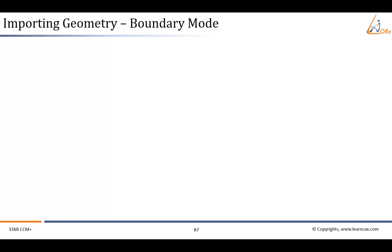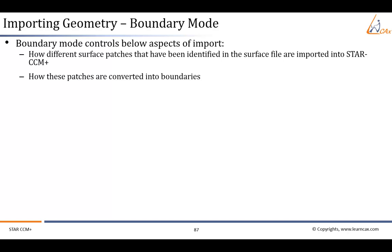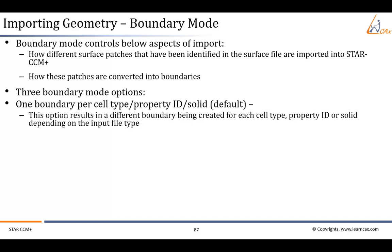We can avoid all this by using the boundary mode option while importing. When you select the 'create new region' option for import mode, you have to select the boundary mode. This will control how different surface patches that have been identified in the surface file are imported into Star CCM+, and also how these patches are converted into boundaries. A patch is a part of the surface that has been tagged in some way to be different from the rest — for example, it has been assigned a different cell type or family name.